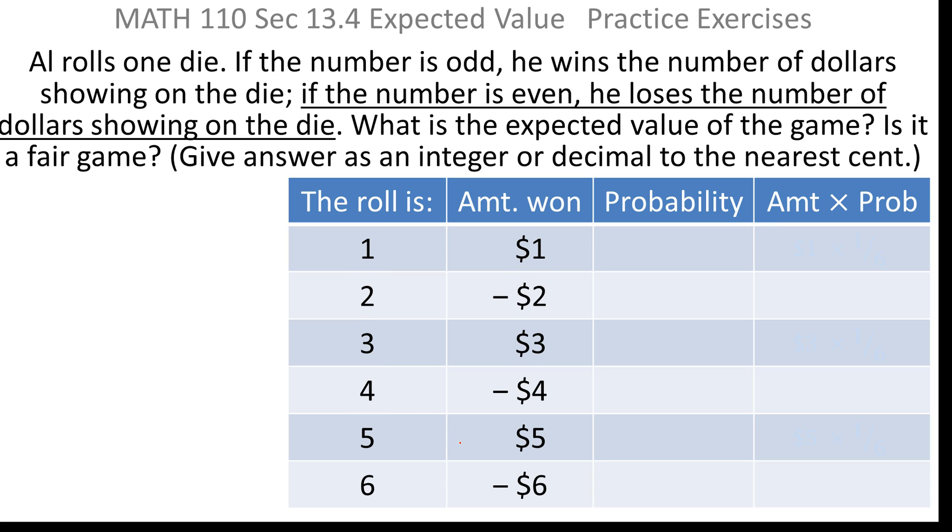But if the number is even, you lose the number of dollars showing on the die. So for two, four, and six, it's a loss. Negative two, negative four, negative six dollars.